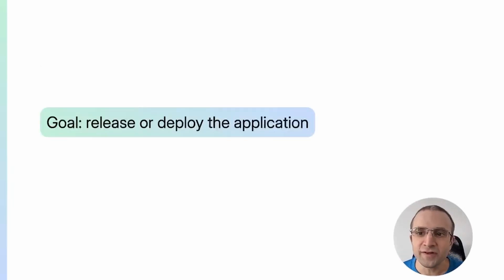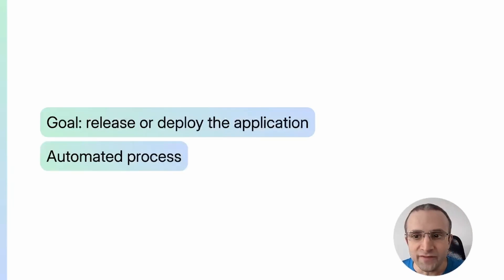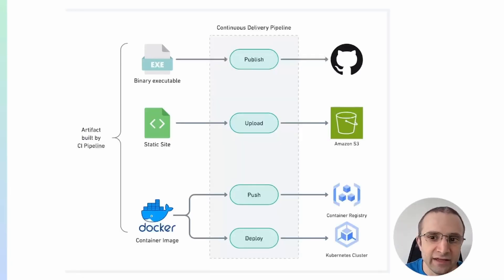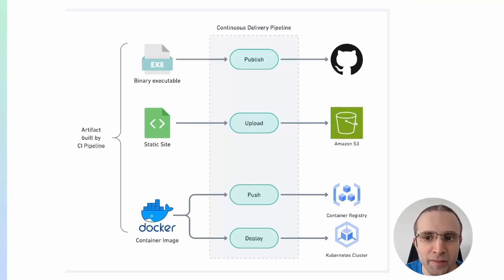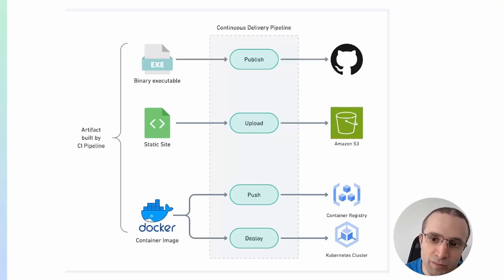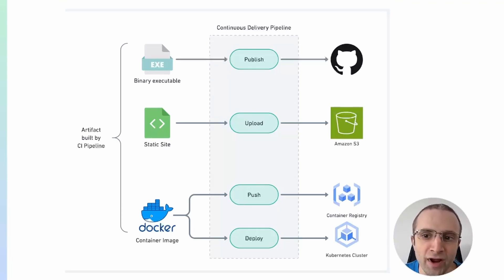The goal of continuous delivery is to create a release we can share with our users. We can go even one step further and deploy the release into production — this process is sometimes called continuous deployment. As with CI, the delivery and deployment step is automated. For example, we may have a process that packages the application and releases it to GitHub, or creates a Docker image and pushes it to a Docker registry. And if we are deploying, the process can take the image and put it into a server or a Kubernetes cluster.